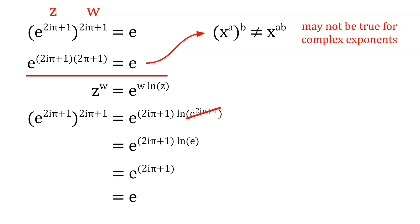So remember to follow the proper steps for complex exponentiation and avoid the mistakes that led to our bizarre conclusion that pi equals zero. Finally, there is another mistake in this proof that I want you guys to try to figure out. Thanks for watching, please subscribe, and I will see you next time.